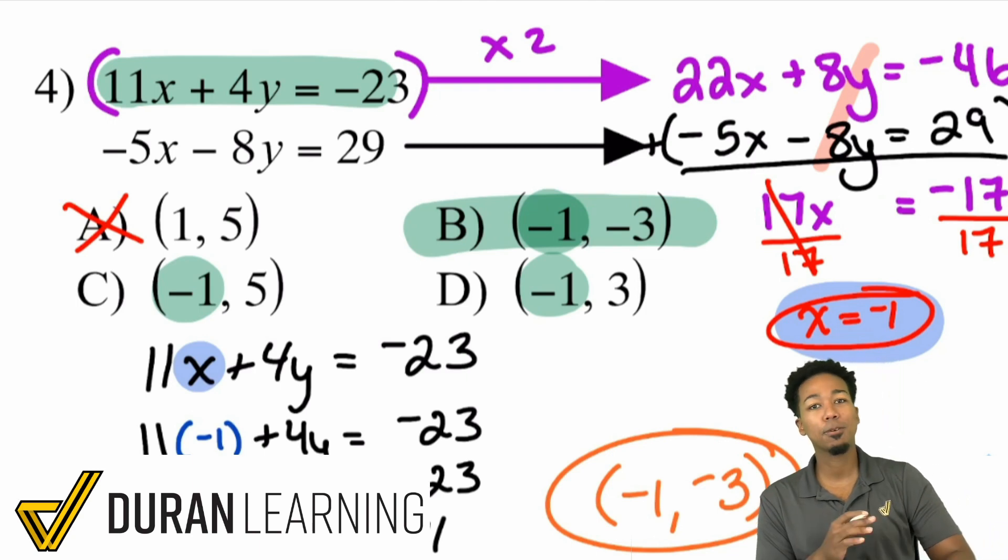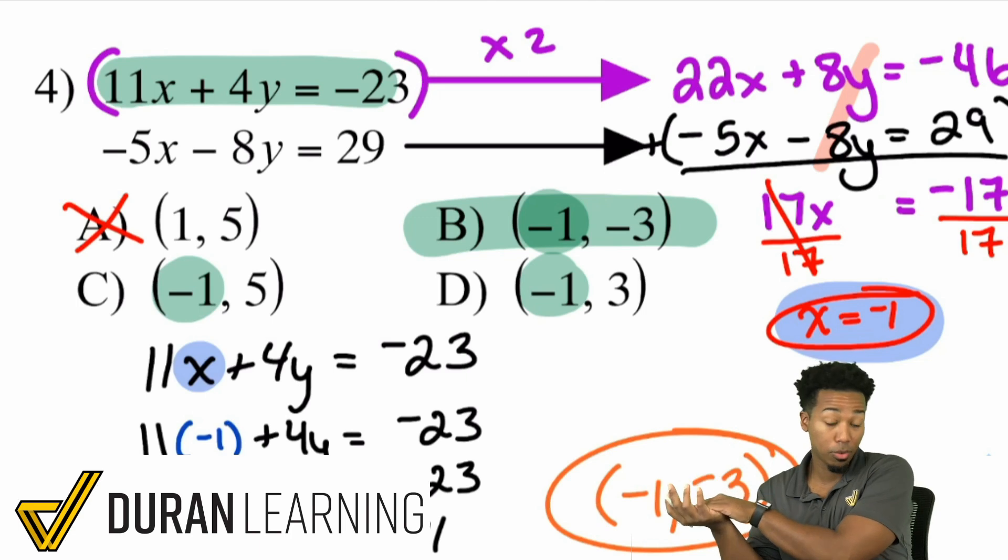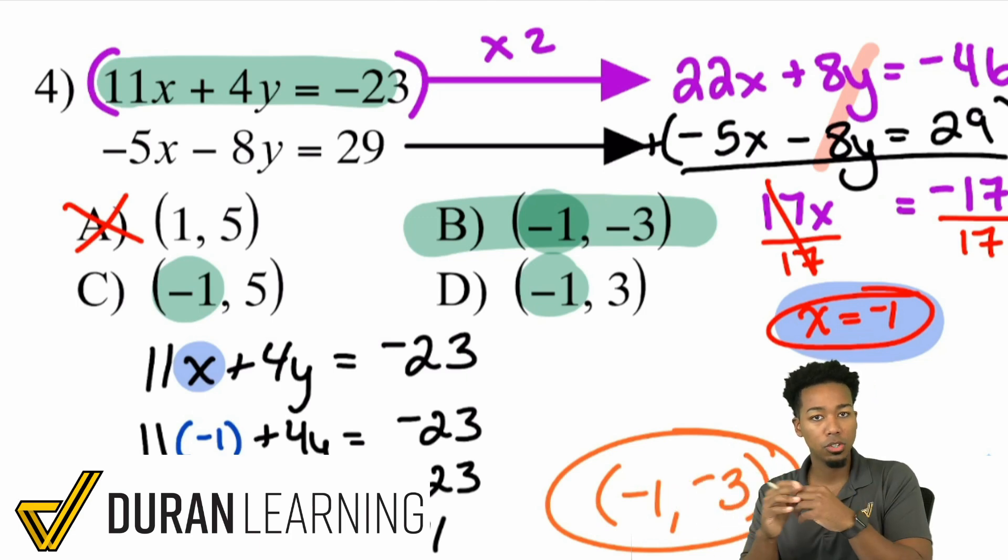This isn't supposed to be super crazy. It's supposed to be a very logical process that we can really rely on. So this was an example where we're using elimination, but before we can eliminate, we just have to modify one of the equations. In the next video, what you'll see is we'll look at equations, system of equations, we've got to modify both. And that'll be the hardest type that you'll do, but it's also going to be very manageable if you've been keeping up up to this point.